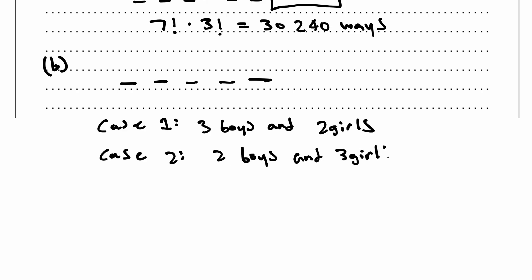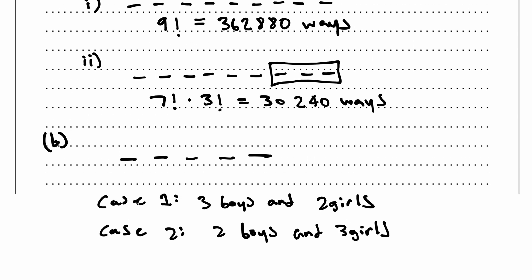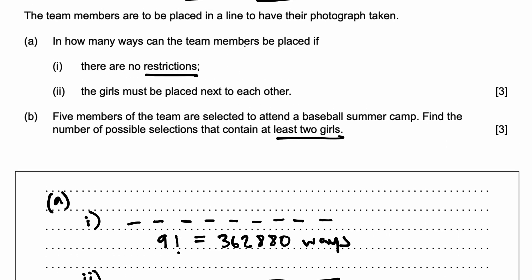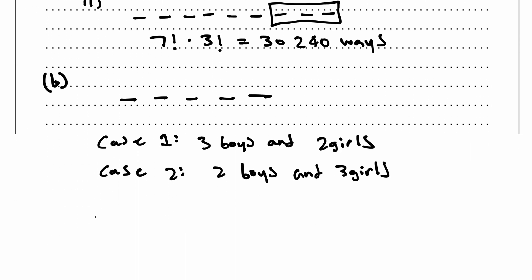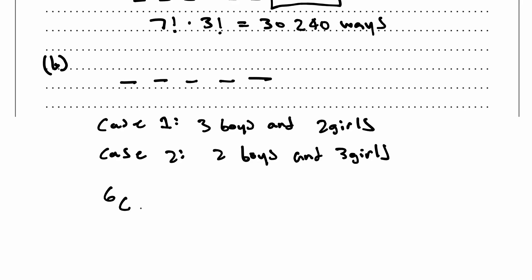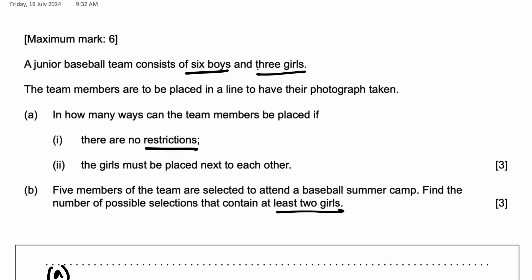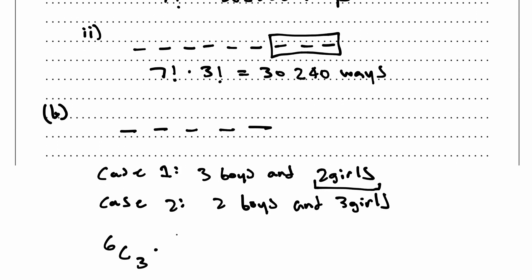Okay, so let's solve this problem. So for case one, what do we do? Of the six boys, we need to choose three of them. So six choose three times by the second combination, which is of the three girls, we need to choose two of them. So three choose two. That's case one.